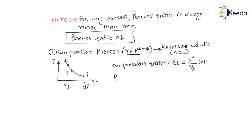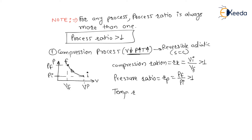There is also a pressure ratio Rp for compression. Since final pressure is greater than initial pressure, Rp = final pressure divided by initial pressure, which is more than one. Similarly, the temperature ratio Rt = final temperature divided by initial temperature, which is more than one, since pressure is directly proportional to temperature.